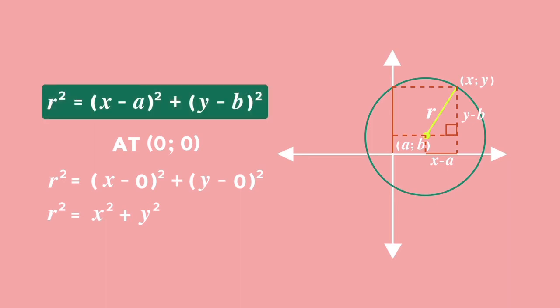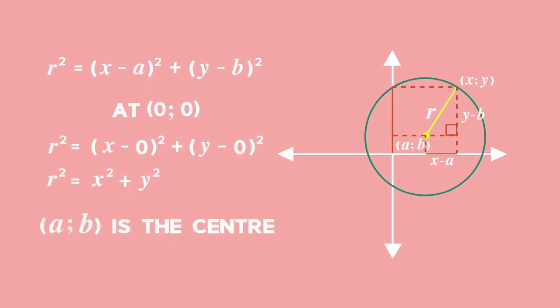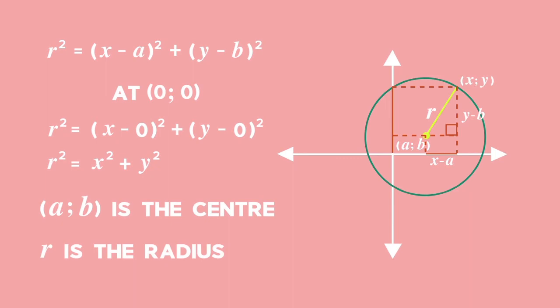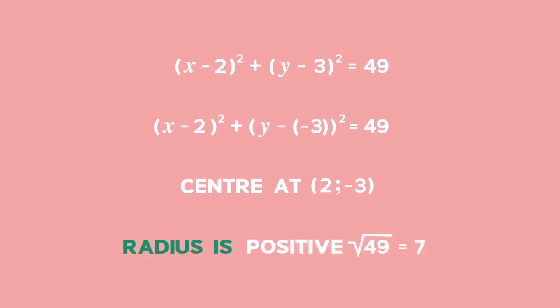This equation is very useful. We can easily see that a, b is the centre of the circle and r is the radius. So for example, this equation tells us that the centre of the circle is at 2, negative 3 and that the radius of the circle is 7 units.